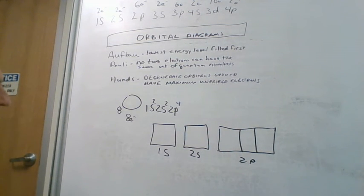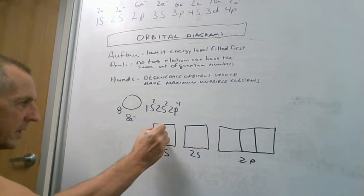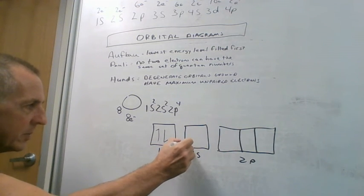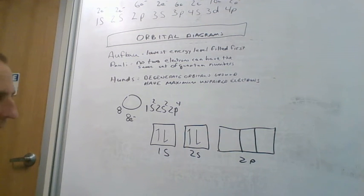Aufbau says we're going to fill the lowest level first, and Pauli says they have to have opposite spins. So we take 1, 2, put them in the 1s. Put 2 in the 2s. And now we get out to our 2p.